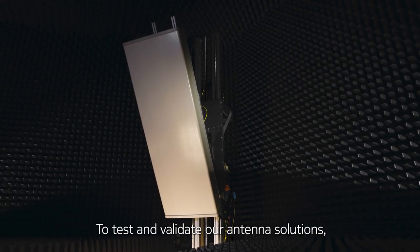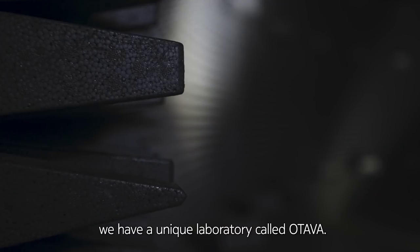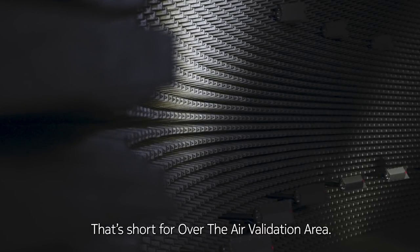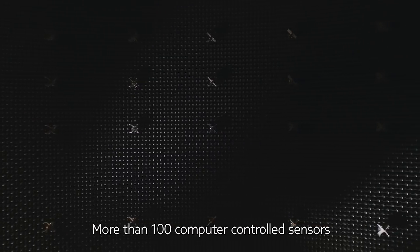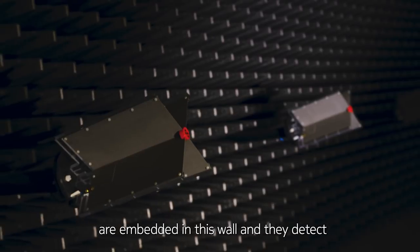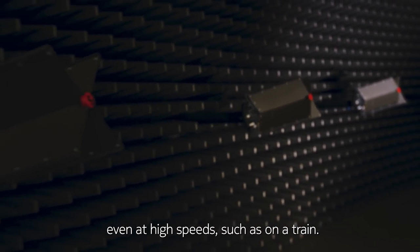To test and validate our antenna solutions, we have a unique laboratory called Ottawa, that's short for over-the-air validation area. More than 100 computer-controlled sensors are embedded in this wall, and they detect how an antenna will perform in the real world, even at high speeds, such as on a train.